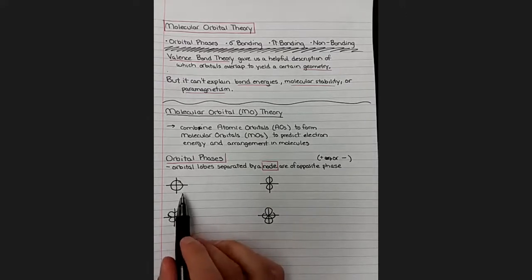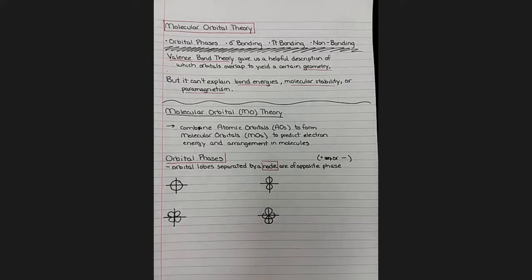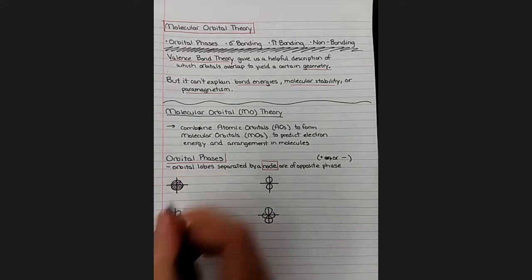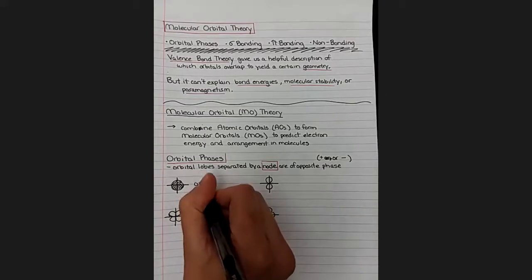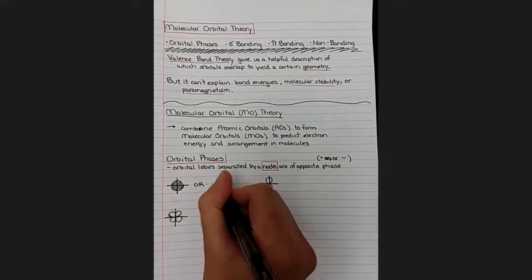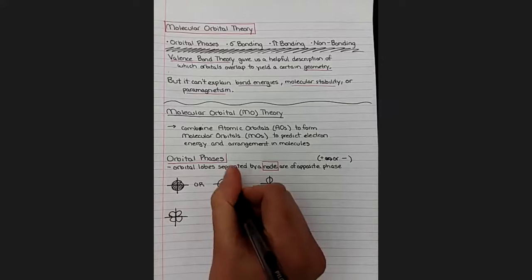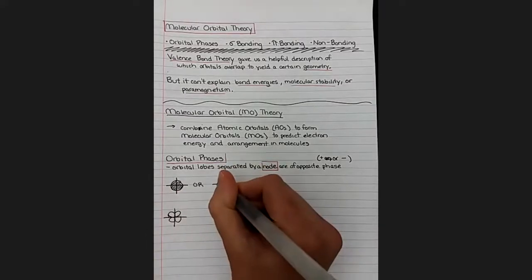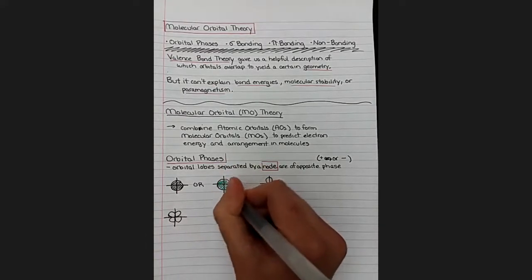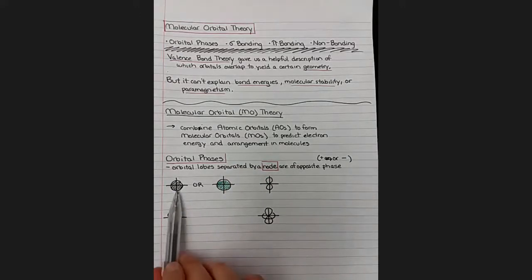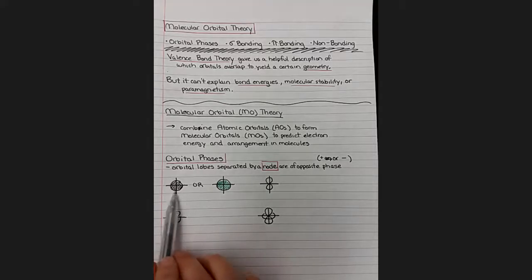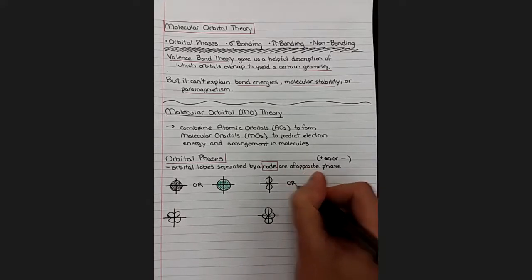So starting with the s orbital, the s orbital only has one lobe, so there's only going to be one phase in this picture. And it doesn't matter which phase we pick. So we could draw it with one phase, or we could draw it with the other phase by coloring in a different color. You can either use two different colored pens to draw the different phases, or you can just have one be colored and one uncolored. That's also an acceptable way to do it if you don't have six pens lying around like I do.